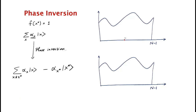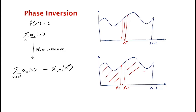Let me show you what this means pictorially. Let's say this is our point x star — that's the amplitude of x star, that's x star minus 1, and that's x star plus 1. So all of x star minus 1 and x star plus 1 are left unchanged. What happens to x star is that it gets inverted — instead of this amplitude, we replace it by minus that.